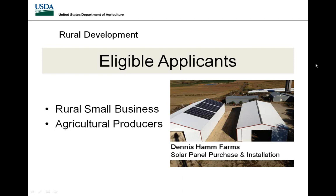To be small, the business must meet the definition in the Small Business Administration size standards, found on the SBA website organized by the North American Industry Classification System code, or NAICS code. Using a keyword search of the main purpose of the business will lead to your correct classification. To be rural is defined as being outside a metropolitan area of 50,000 or greater and its adjacent urbanized area. These areas include the Twin Cities metro area, St. Cloud, Duluth, Rochester, Moorhead, and East Grand Forks.